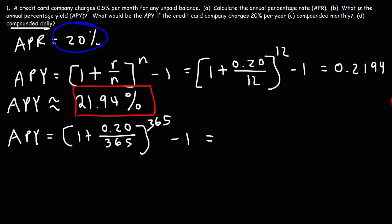1 plus 0.20 divided by 365. That's 1.0005479452. If you raise that to the 365th power, and then subtract it by 1, you're going to get 0.22133585. So, now let's take that value. Let's multiply it by 100%. So, this is going to give us an annual percentage yield of 22.13%.